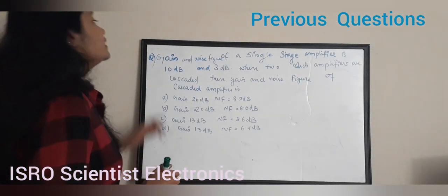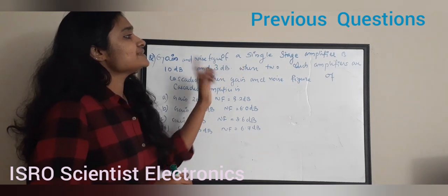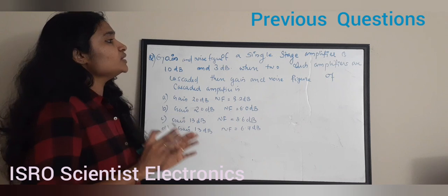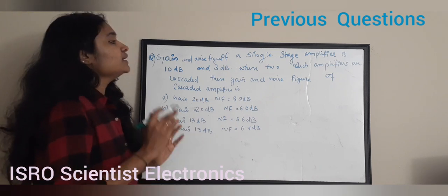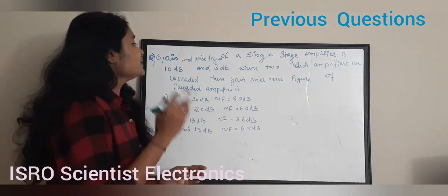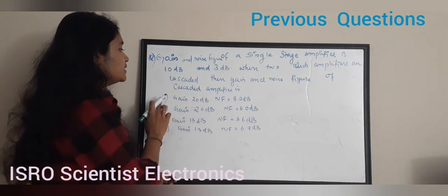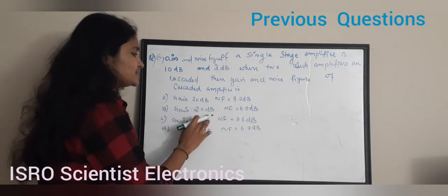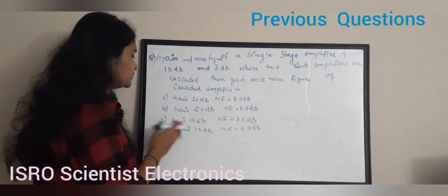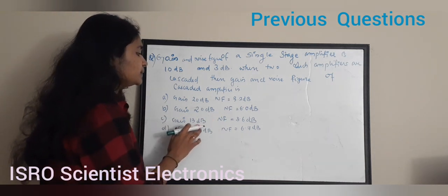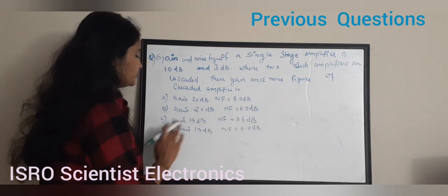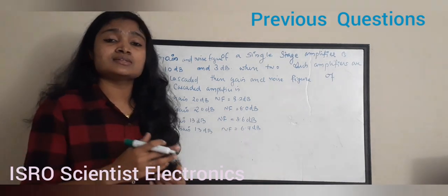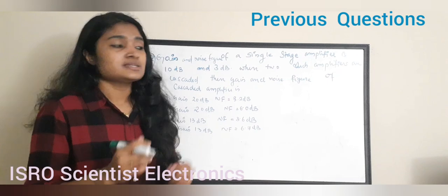The first question: the gain and noise figure of a single stage amplifier are 10 dB and 3 dB. When two such amplifiers are cascaded, the gain and noise figure of the cascaded amplifier is: (A) gain 20 dB, noise figure 3.2 dB; (B) gain 20 dB, noise figure 6.0 dB; (C) gain 13 dB, noise figure 3.6 dB; (D) gain 13 dB, noise figure 6.7 dB. This question is about cascaded amplifiers.